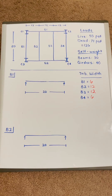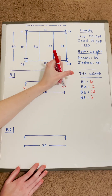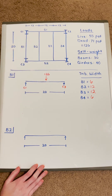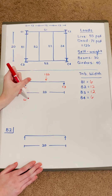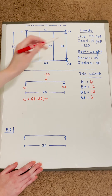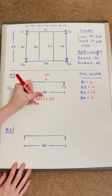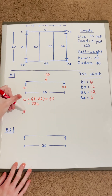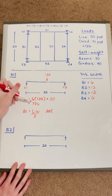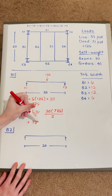The next thing you do is your force diagram, which shows all the forces acting on a member. Beam 1 is 20 feet long and is being supported by columns 1 and 3 with vertical forces acting upward. It also has a force acting downward carrying that 126 PSF. When you solve for omega, you take the tributary width — that's 6 — times 126, plus the self-weight of 30 pounds, which comes out to 786 pounds per foot. Plugging into the formula, the reaction force on beam 1 equals L times omega divided by 2, so 20 times 786 divided by 2, which comes out to 7,860 total.